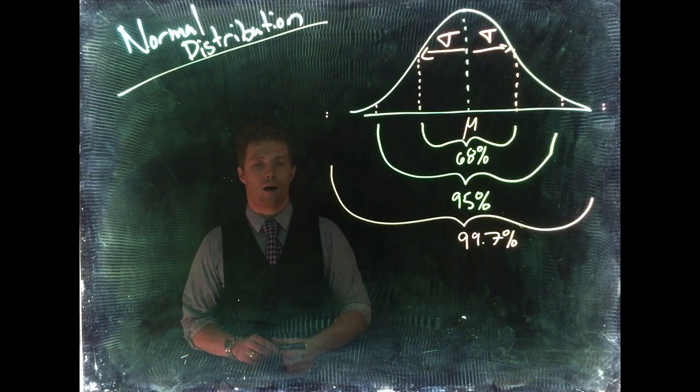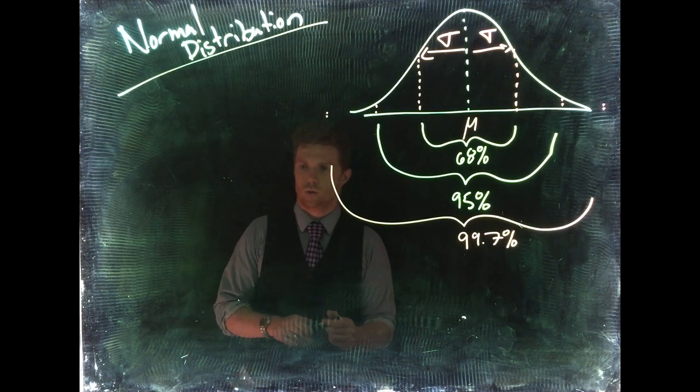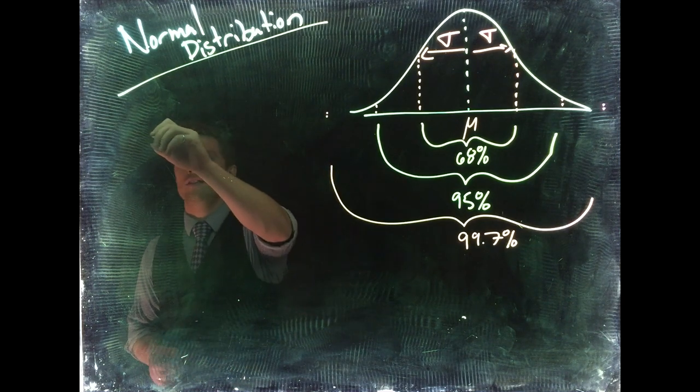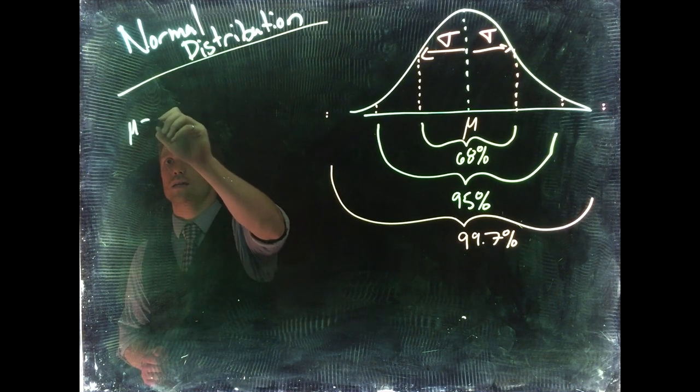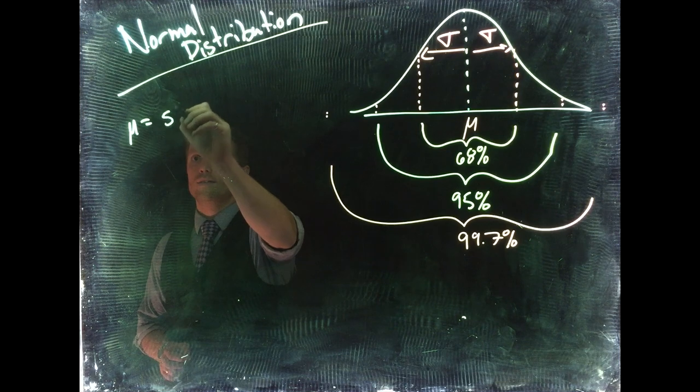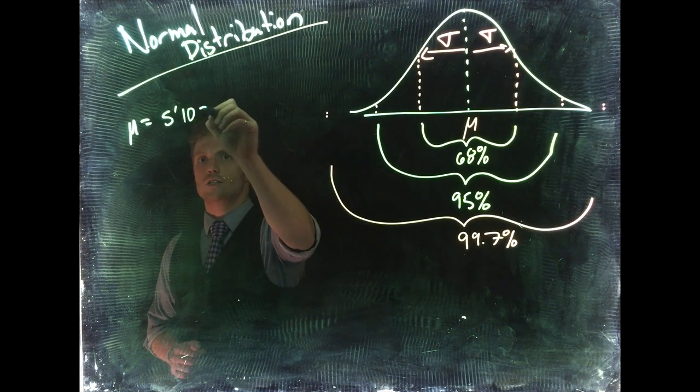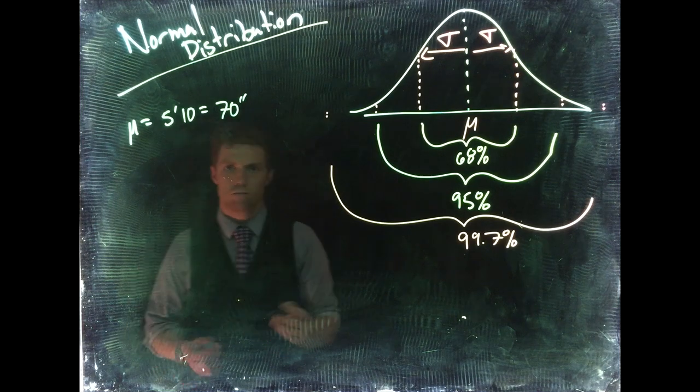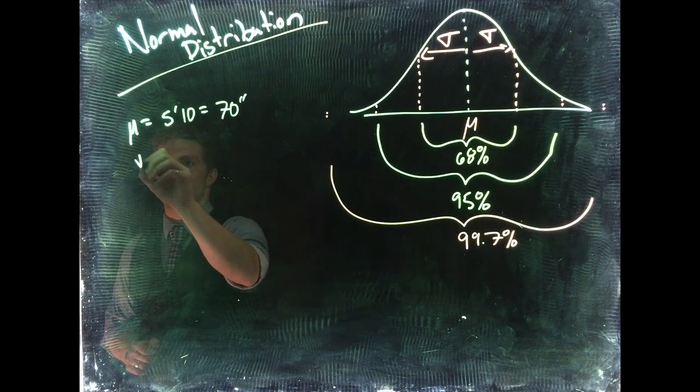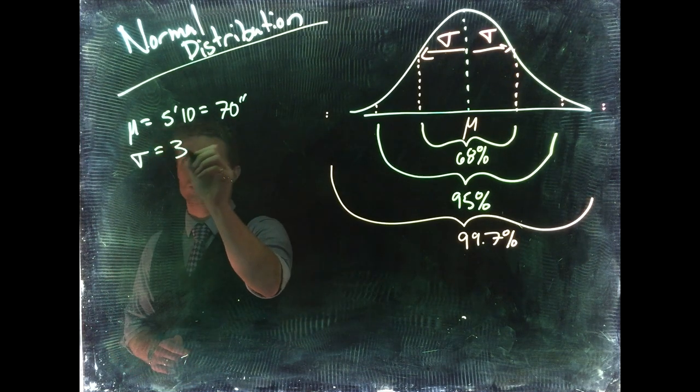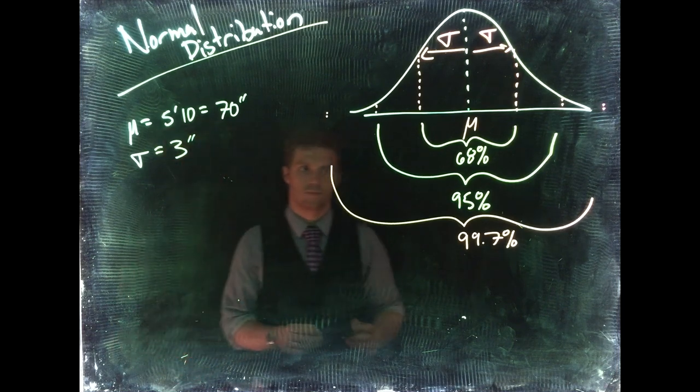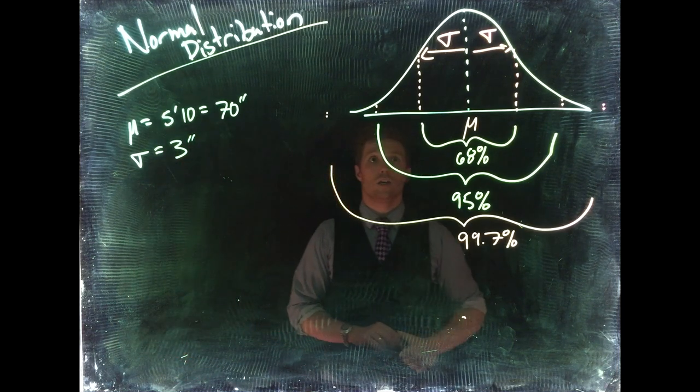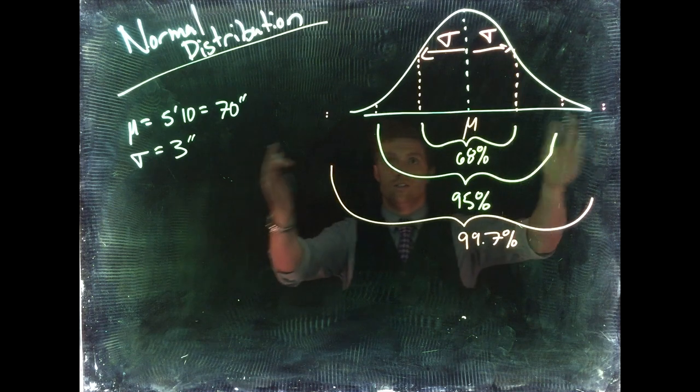Let's talk a little bit about maybe an example. We know that for men in the United States, the mean is basically 5 feet 10 inches, which is equal to 70 inches. So that's the mean. We'll say that the standard deviation is then equal to 3 inches.